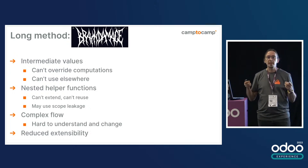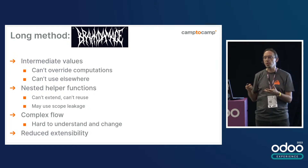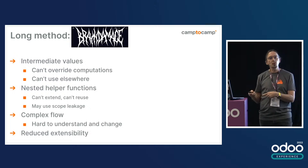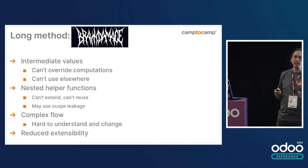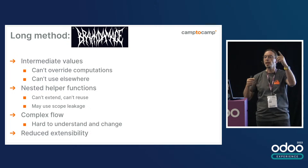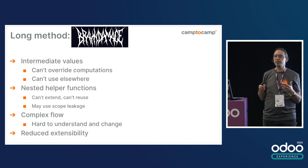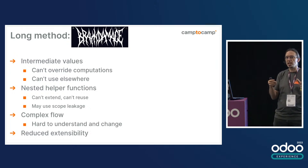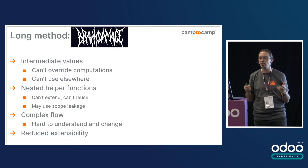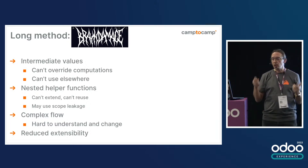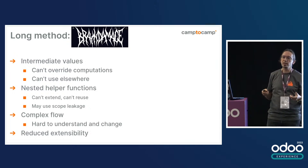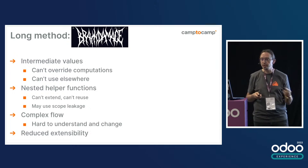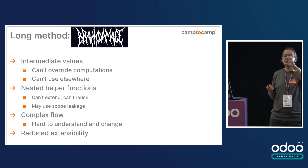There are intermediate values in there that you may want to reuse, but you can't override their computation or extract them from the function. You have sometimes nested helper functions which you can't extend, which you can't reuse. And they may use scope leakage — meaning they can access the local variables from the method. This is cool sometimes, but it makes it hard to understand because sometimes in these long methods you have the same variable names reused for different purposes. Then if you change things and start calling that nested method, you'll get strange results and it's a nightmare to debug.